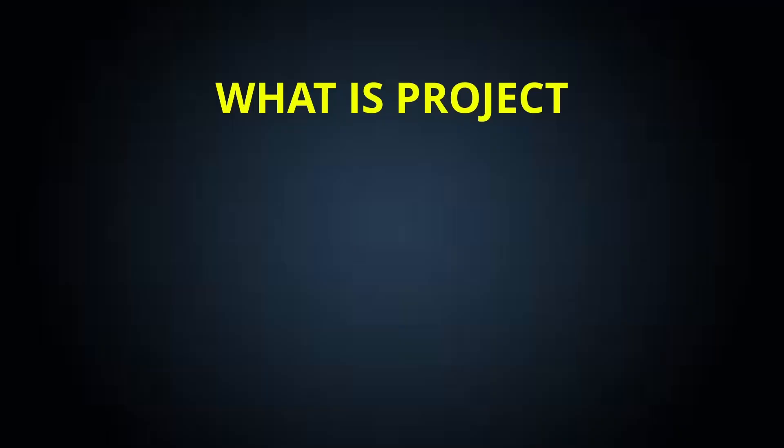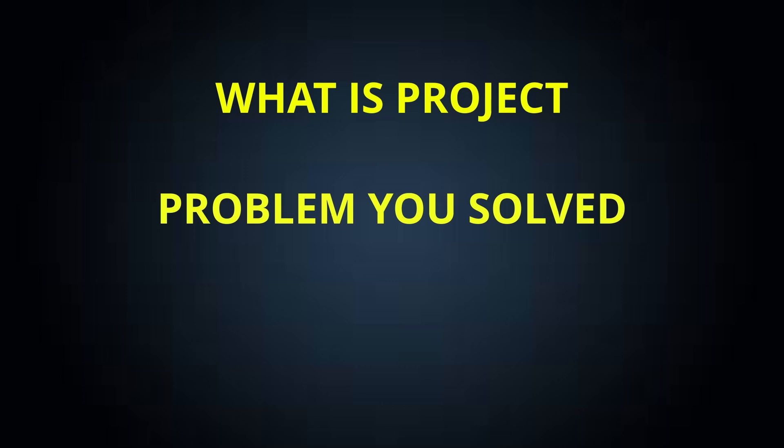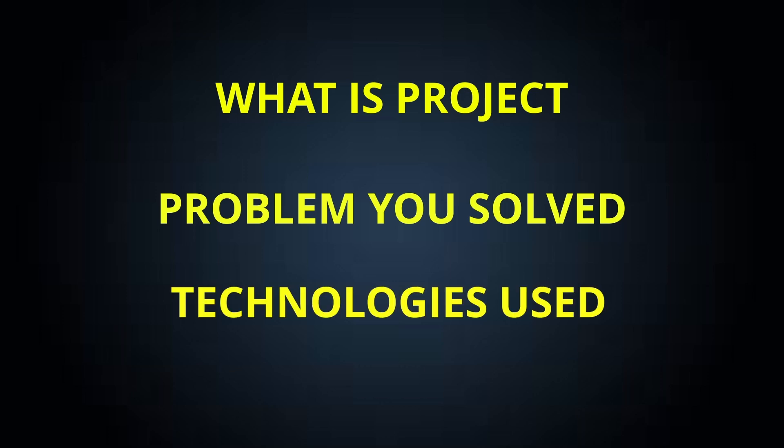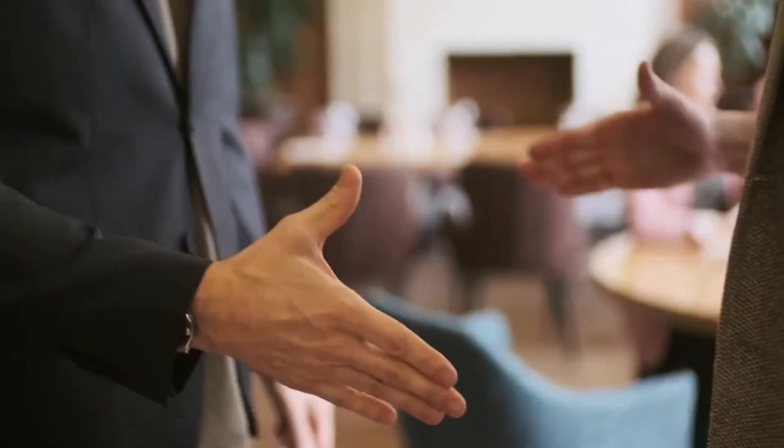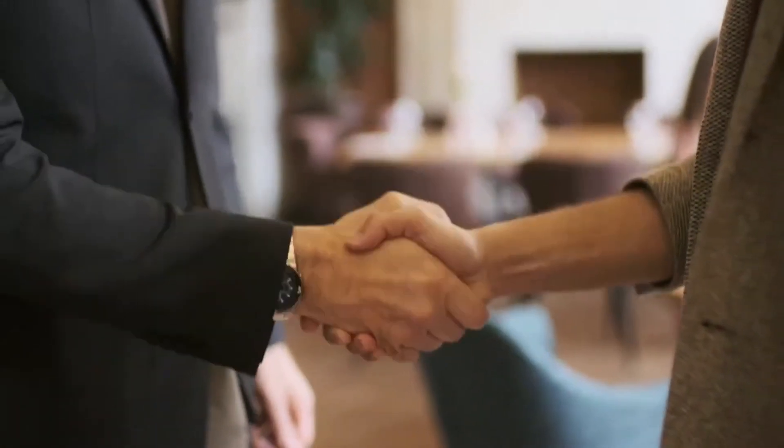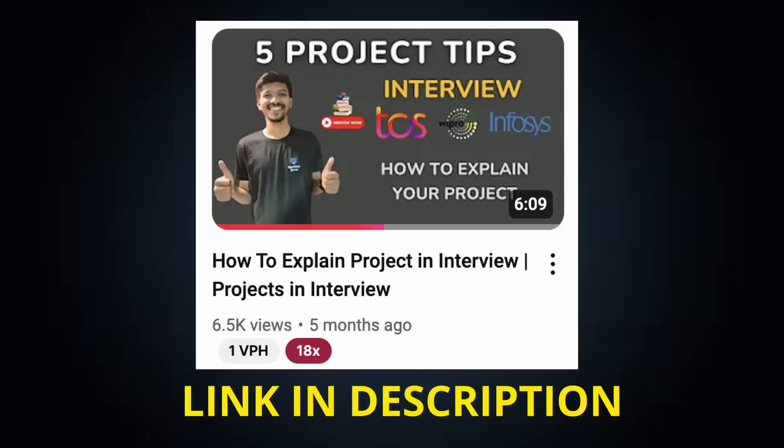Whenever the interviewer asks you about your project, make sure you explain it in a short and crisp way so the interviewer gets a clear idea. When mentioning your project, don't forget to include these four important things: what is your project, what problem you solved, which technology you used, and what was your role. Make sure you mention your role at the end so the interviewer can ask questions only on your role rather than the whole project. I have already made a detailed video on how to explain your project — the link is in the description box.